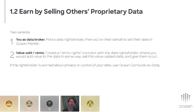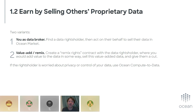A second way to earn by selling data is through others' proprietary data. There's this idea of data brokers — people who go around looking at data that might be valuable and figure out a way to package and sell it. We've made it a lot easier to become a data broker. If you find data that's potentially interesting or valuable, you can put that up on Ocean Marketplace. Maybe you find organizations or individuals that have valuable data — you go to them, make a contract: 50-50 split, and sell that data inside Ocean Market.